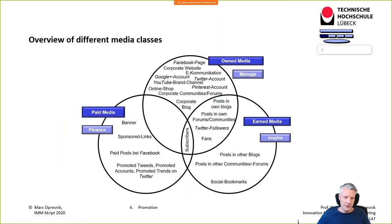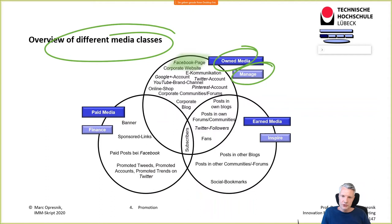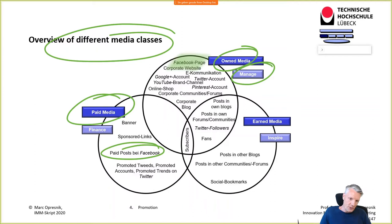We differentiate between three different classes of media. The first is owned media — literally what you own — for example, your Facebook page, your LinkedIn corporate page, your corporate website. You need to manage, control, and coordinate this media, thinking about its content. Then there is paid media, which is what you pay for — for example, paid posts on the Facebook platform, banner ads, or sponsored links.